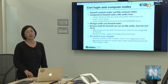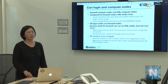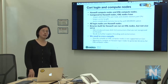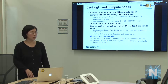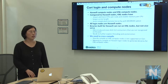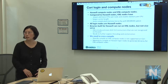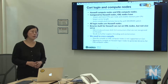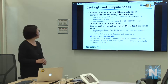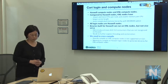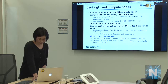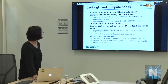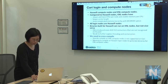On Cori, compiling directly on KNL nodes is not supported due to our OS image configuration. Even on systems that allow it, it would be much slower. So we must do a cross-compile, meaning we compile on the login nodes targeting KNL.